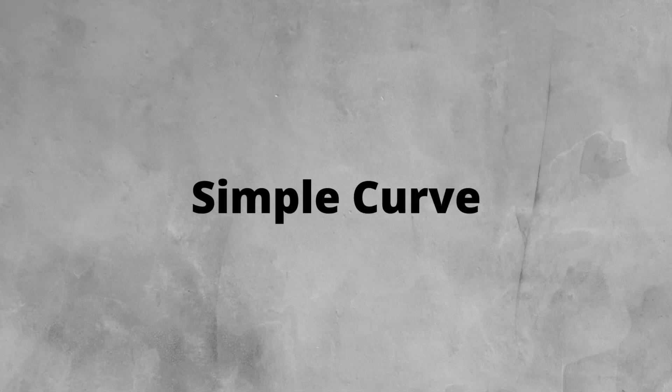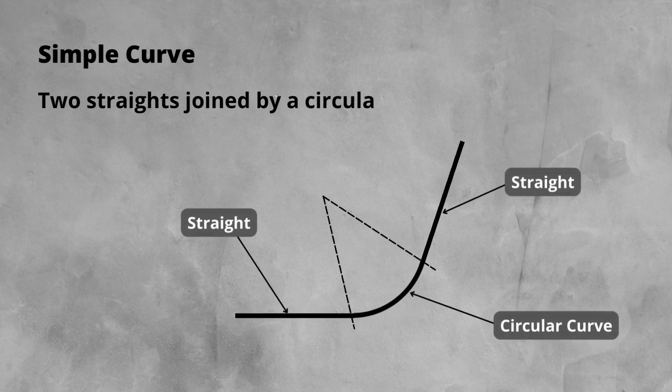The most basic combination of the elements we have just looked at is the simple curve. The simple curve is comprised of two straight sections that are joined by a circular curve of a constant radius.